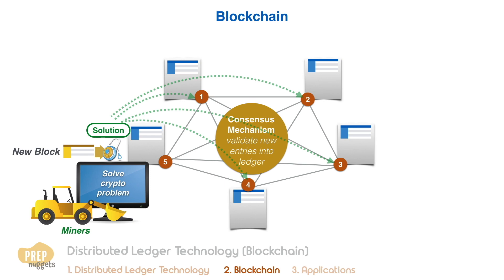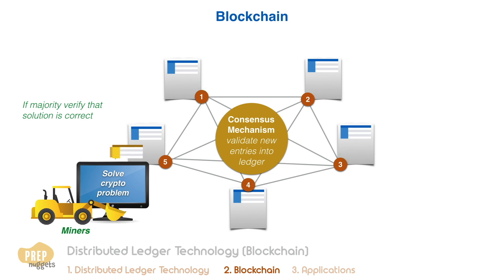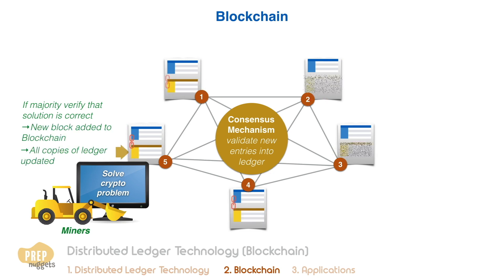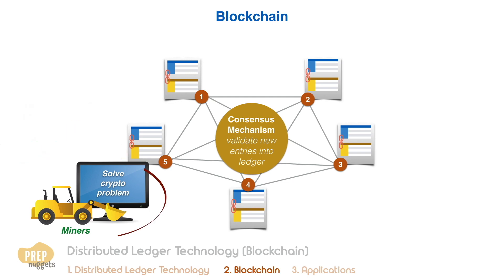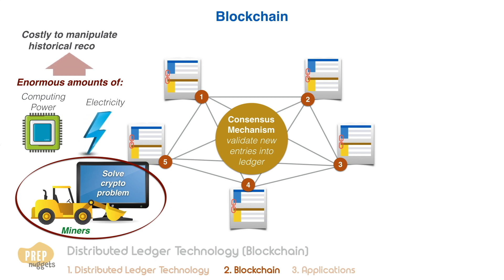The solution has to be verified by all the other participants in the network. If the majority of the nodes verify that the solution is correct, the new block is added to the blockchain and all copies of the distributed ledger are updated. Mining requires vast resources of computing power and electricity, imposing substantial costs on any attempt to manipulate a blockchain's historical record.